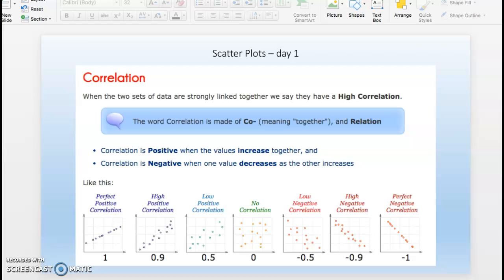Another vocabulary word is correlation. It's when two sets of data are strongly linked together. We say they have a high correlation. As an example, if you look down here, we measure the correlation from one to negative one.